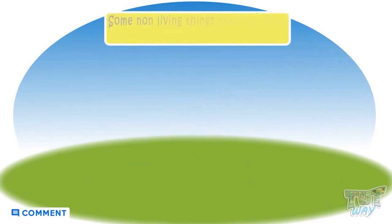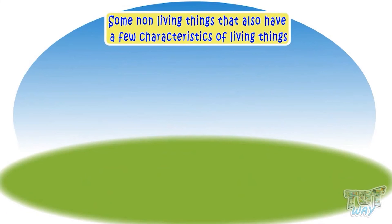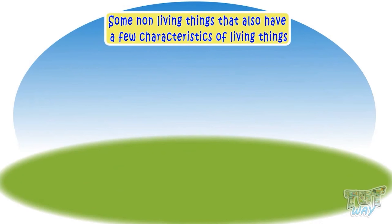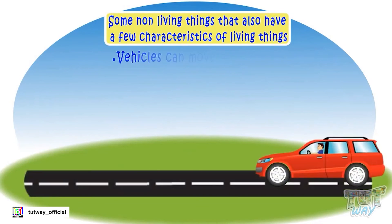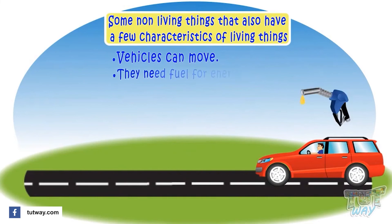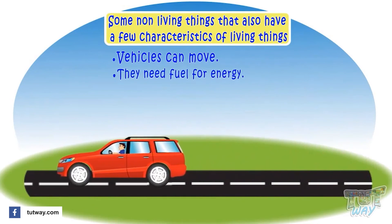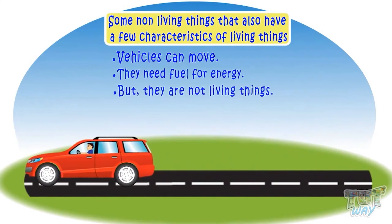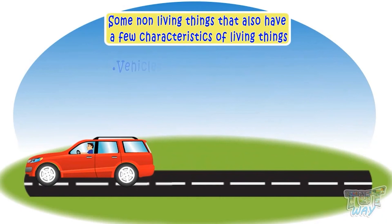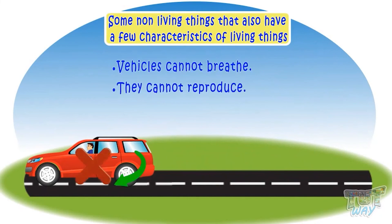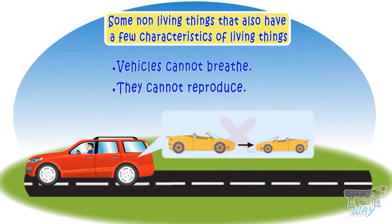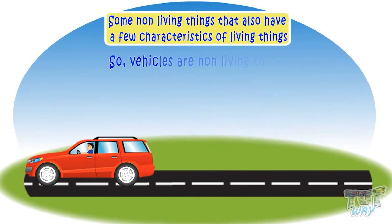Now let's see some examples of non-living things that also have a few characteristics of living things. Vehicles can move and they need fuel for energy, but they are not living things as they cannot breathe and cannot reproduce. So vehicles are non-living things.